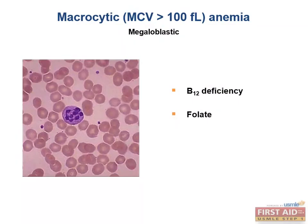These are both megaloblastic and they both have the same characteristic and often tested feature of hypersegmented neutrophils, as shown in this blood smear. These nutritional deficiencies both alter the synthesis of nucleic acid, as we reviewed in our biochemistry chapter, and have very similar presentations: macrocytic anemia, glossitis, hypersegmented neutrophils, and increased homocysteine.